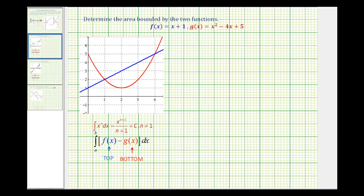We want to determine the area bounded by the two functions, f of x equals x plus 1 and g of x equals x squared minus 4x plus 5.